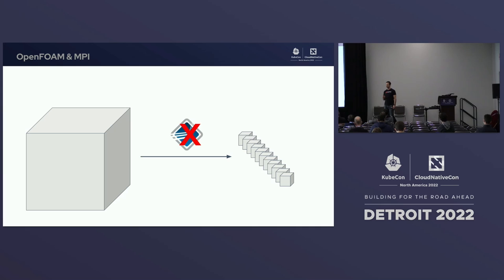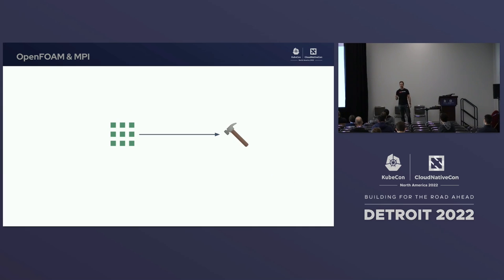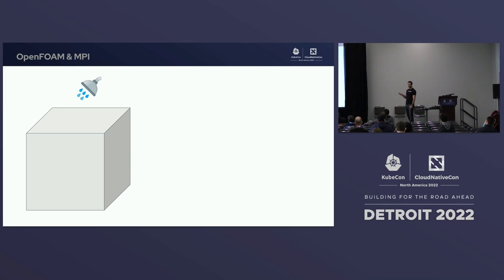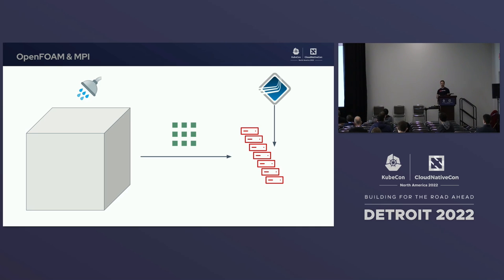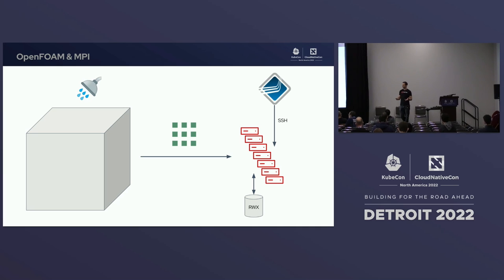MPI doesn't do the breaking up — it just does the processing. OpenFoam is actually lots of tools to help do fluid dynamics stuff. So we take our big fluid dynamics problem, break it up into little pieces with OpenFoam, and then use MPI to do all the processing. Those things are actually like individual servers for most folks who are used to HPC clusters. And it communicates over SSH — MPI finds all these systems with SSH, goes into them, does the work. We also need some kind of shared storage because all the little pieces need to find the work they have to do.